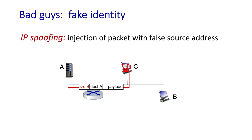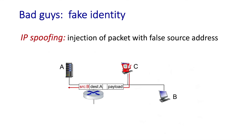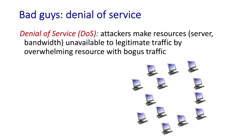We should also assume that a bad actor can inject packets into the network containing any information they want. For example, a bad actor at C can send spoofed—that is, faked—packets to A with a fake source address indicating the packet came from B. This is conceptually the same as a phishing email claiming to be from a bank or colleague, perhaps saying they've come into a multi-million dollar sum and asking you to help deposit it. You don't believe them, so why should a piece of network equipment believe what a packet says just because it arrived?